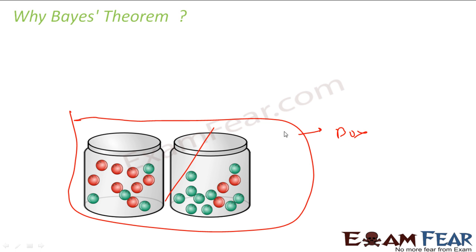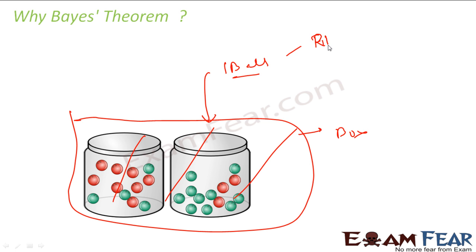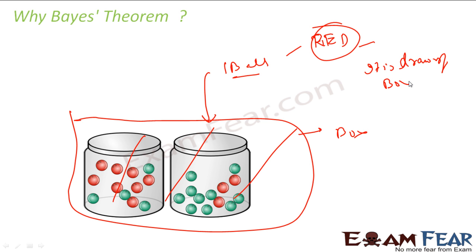The jars are not visible now. From this box you take out one ball. You do not know which jar you are taking from because everything is hidden in the bigger box. You do not know which jar you are choosing, and you took out one ball. You saw that the ball you got is red. Now you want to find the probability that it is drawn from jar 1 or jar 2.